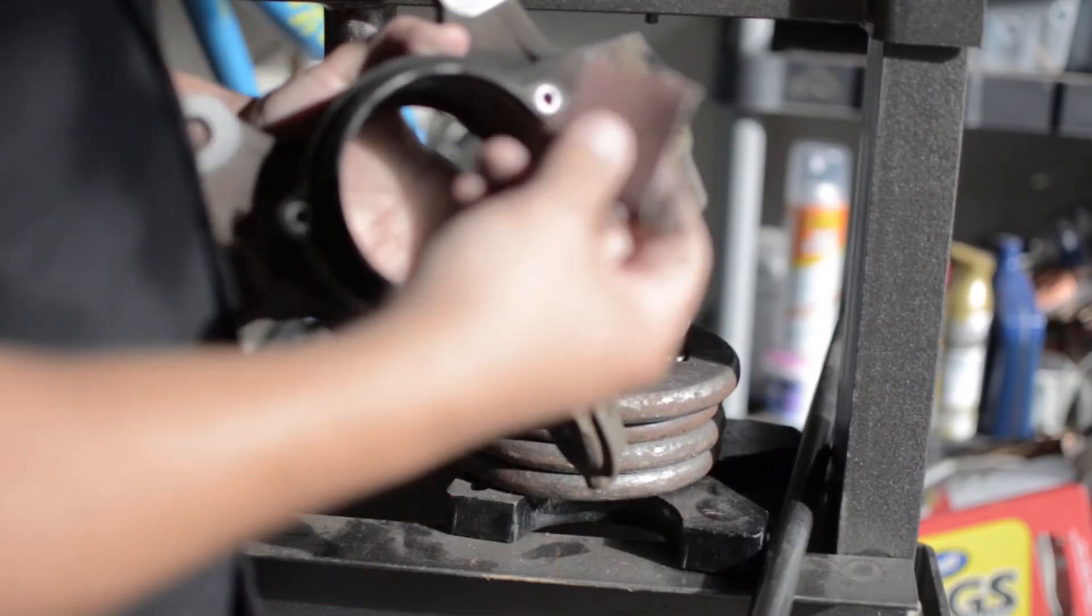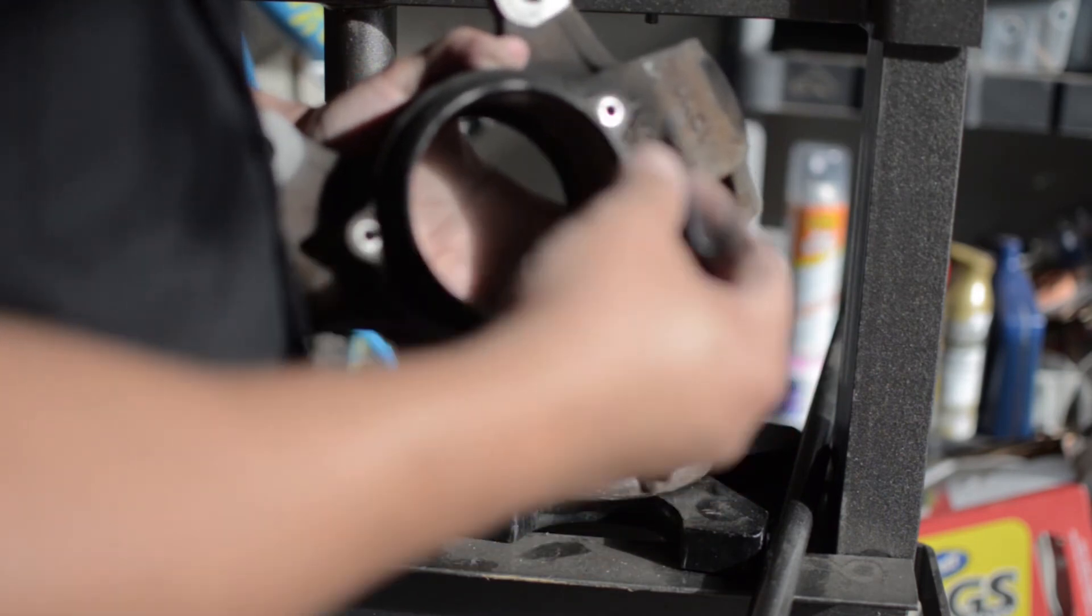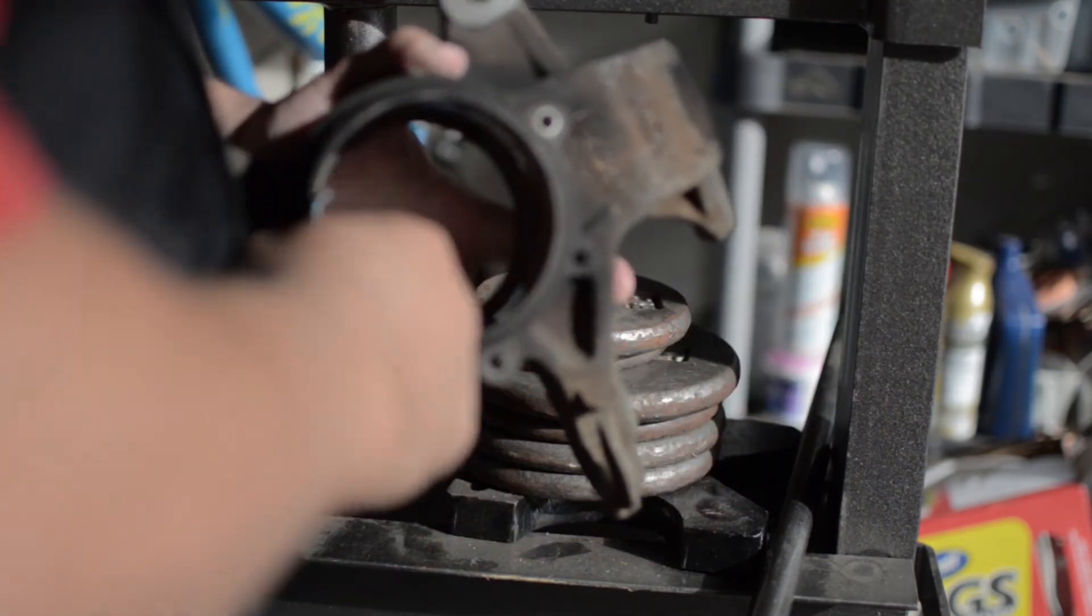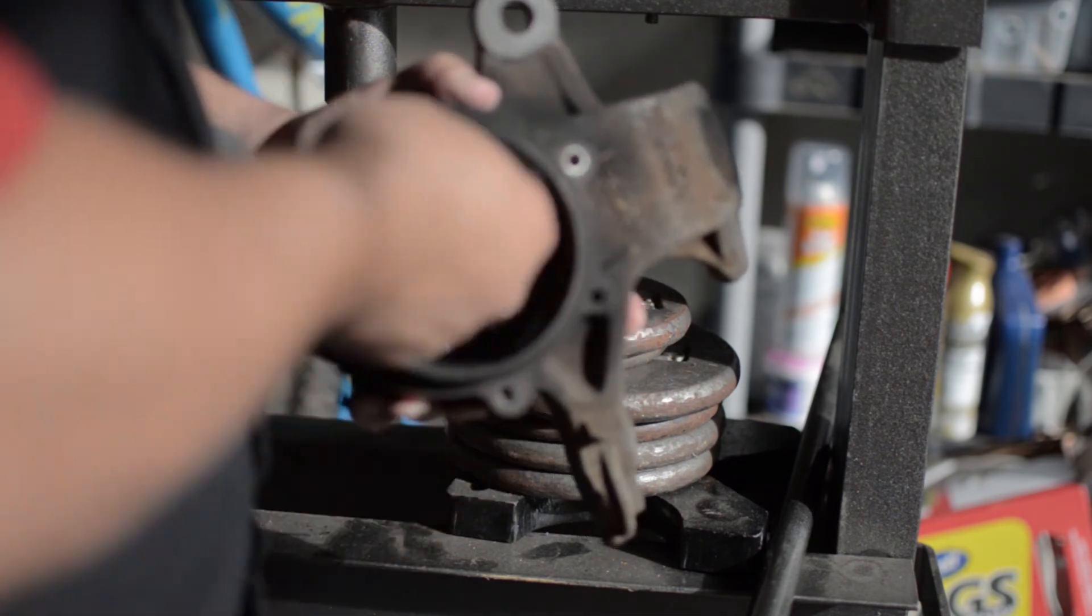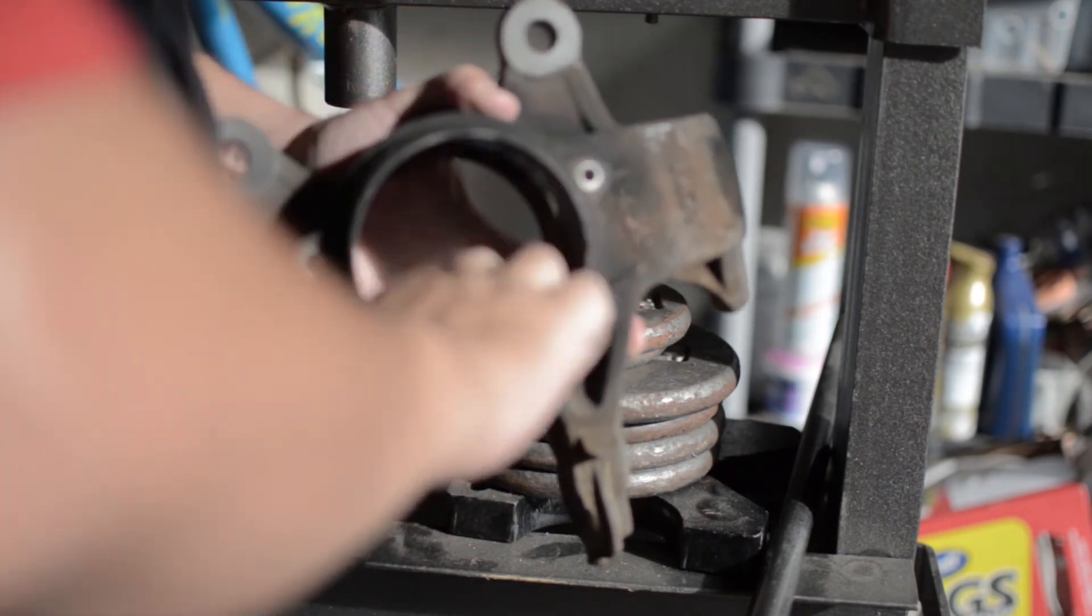Now I'm just going to use a little bit of fine sandpaper just to clean up the inside of the hub—not a lot, just a little bit to get rid of any dirt and debris.